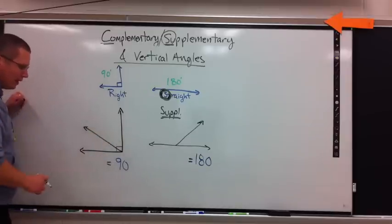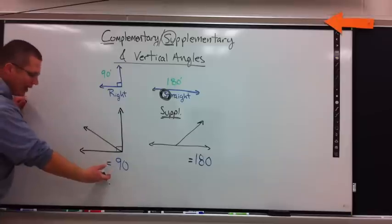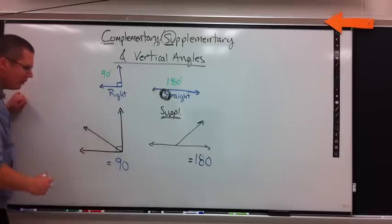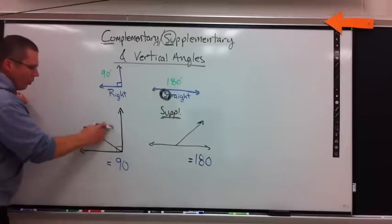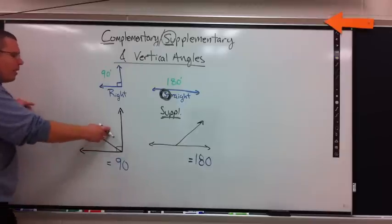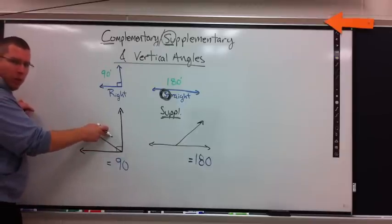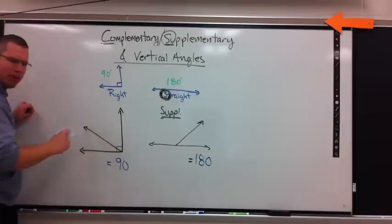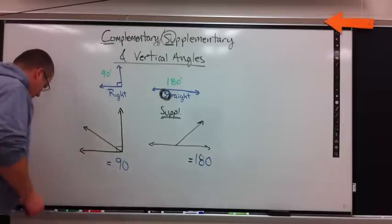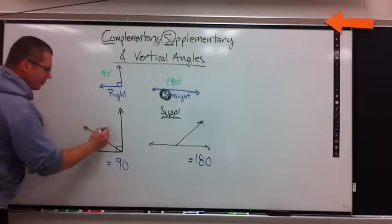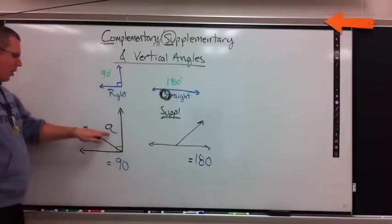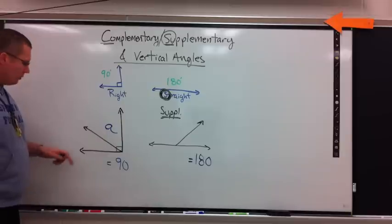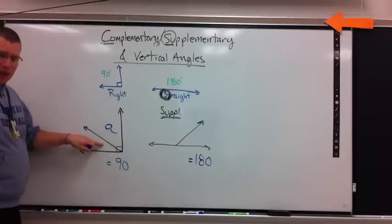So imagine you have a picture like this. We want to be able to write an equation, a truthful statement. What is this angle worth? So if I want to label right now what this angle is worth. Some number, but we don't know what the number is. What should I put there?